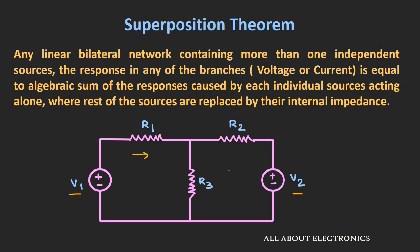According to the superposition theorem, in any linear bilateral network containing more than one independent source, the response in any particular branch — either voltage or current — is equal to the algebraic sum of the responses caused by individual sources acting alone, while all other sources are replaced by their internal impedance. For ideal sources: ideal voltage sources are replaced by short circuits and ideal current sources by open circuits.